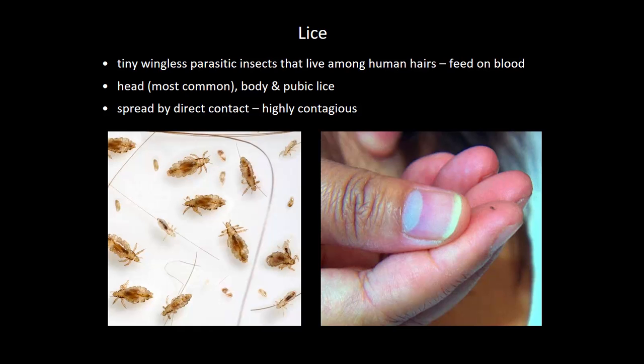Now let's talk about lice, which is very common, particularly in schools or camps. Lice are very tiny, wingless, parasitic insects. They live among human hairs and feed on blood. The most common type is head lice, which feeds on the scalp. Lice do not fly — they crawl fairly quickly, about 23 centimeters per minute — and they don't jump from person to person.